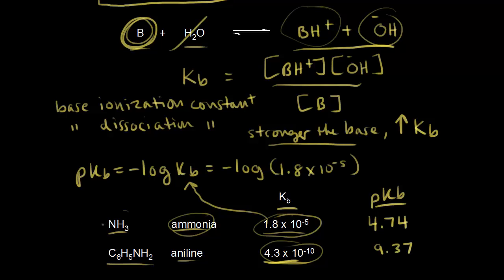Comparing ammonia and aniline: ammonia is the stronger weak base because it has a higher KB value, and notice its pKB is a lower value — analogous to what we discussed for pKA. Next, we'll do a pH calculation for a solution of ammonia.